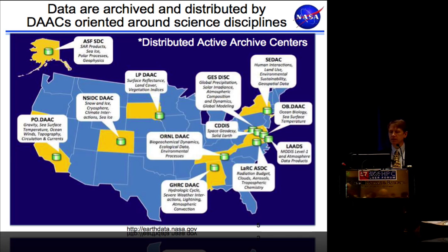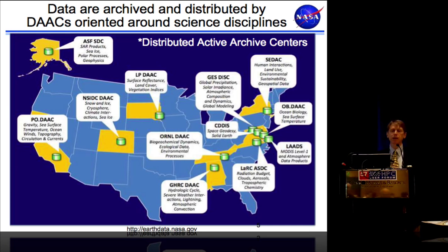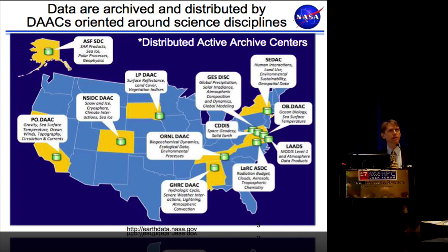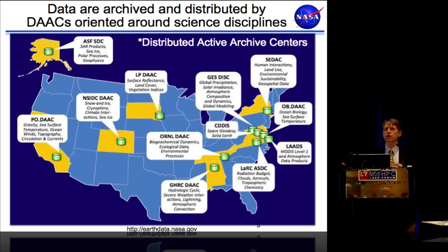There are 12 distributed active archive centers, distributed across the United States, with a significant concentration at Goddard Space Flight Center where four of them are located. They have been allocated more or less by discipline. Up in Alaska, the Alaska Satellite Facility deals mostly with synthetic aperture radar products related to sea ice and polar processes. In California, there's the physical oceanography DAC, while at Goddard, the OBDAC is the ocean biology DAC, focused on ocean color and chlorophyll.